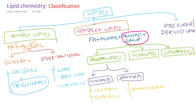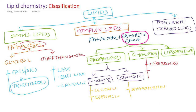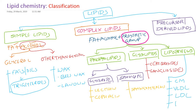Glycolipids are lipids with carbohydrates. Examples are cerebrosides and gangliosides. Lipoproteins have protein as the additional group. Examples are chylomicron, very low density lipoprotein (VLDL), low density lipoprotein (LDL), and high density lipoprotein (HDL).